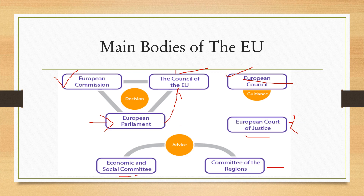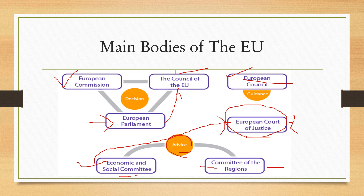Next are the Economic and Social Committee and the Committee of the Regions — these are advisory groups. The Economic and Social Committee is a non-political body that gives representatives of Europe's civil society a voice to express opinions on issues of the European Union. The Committee of the Regions is a body of 350 representatives of regional and local governments working to increase participation. Both of these are advisory groups of the European Union.